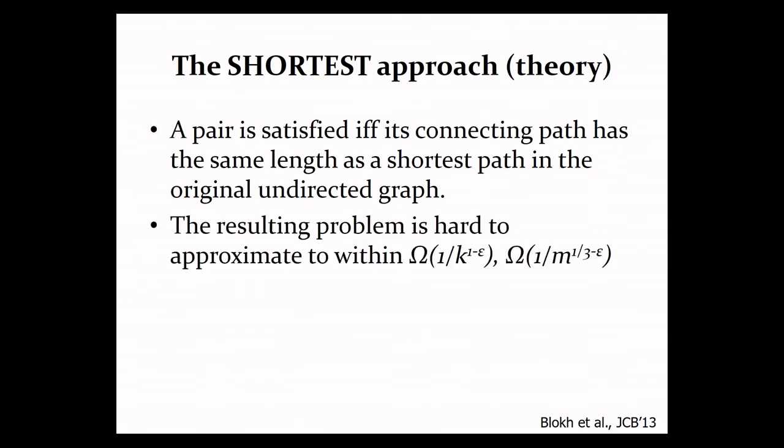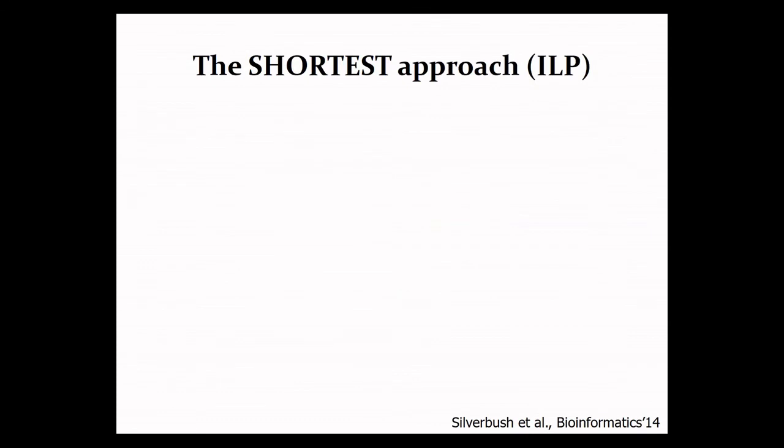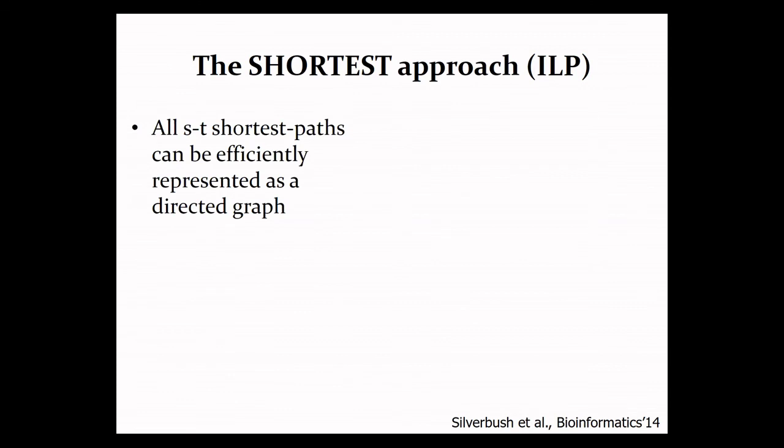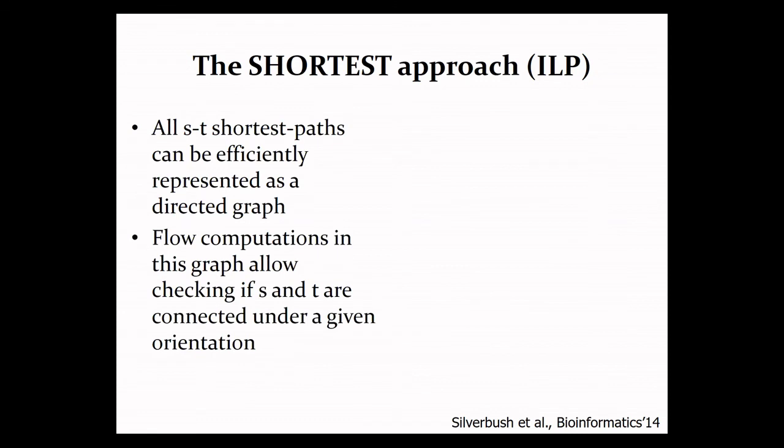Now this problem variant is again, seems to be harder than the previous ones. For example, we can show sublinear hardness of approximation for it. Nevertheless, we can still design an efficient integer linear program for it that runs again in seconds, by using the fact that we can efficiently represent all shortest paths between a pair of vertices using a directed subgraph. And given an orientation, we can apply flow computations on this directed subgraph in order to check if S and P are connected.